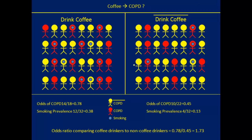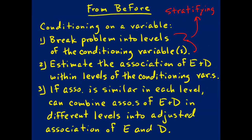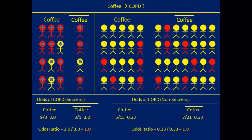We moved all of the smokers over to the left side and the non-smokers to the right side. Then the next step in conditioning on a variable was to estimate the association of exposure and disease within levels of the conditioning variable, which in this case is smoking. The estimation of the association between coffee drinking and COPD in the smokers gave an odds ratio of 1.0. The estimation of the association between coffee drinking and COPD in the non-smokers also gave an odds ratio of 1.0.